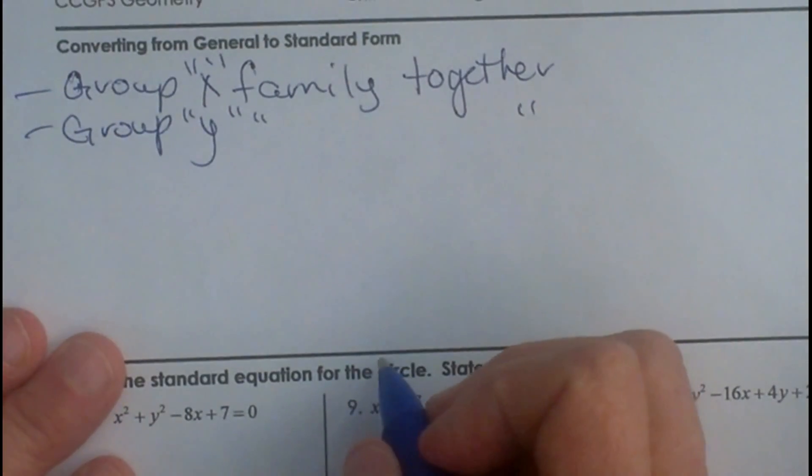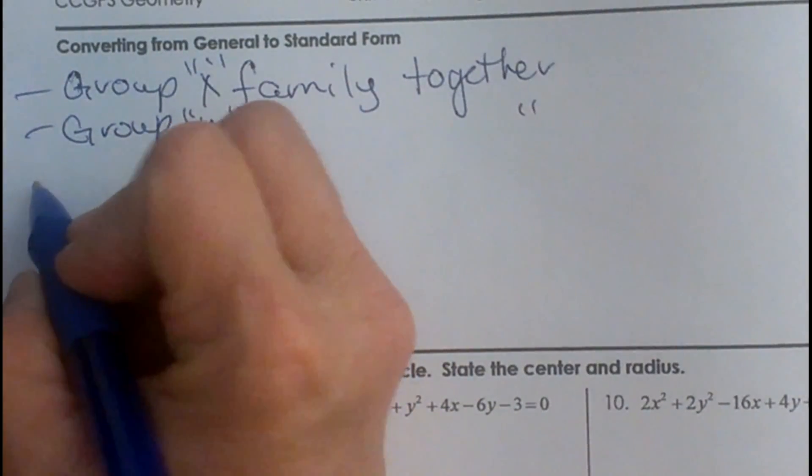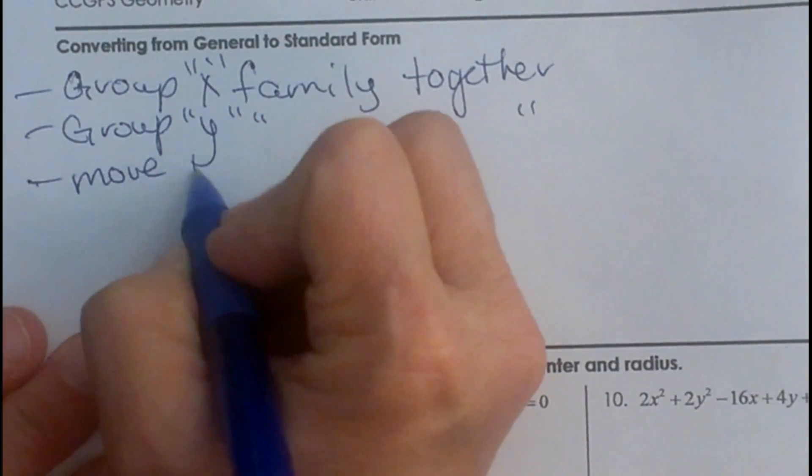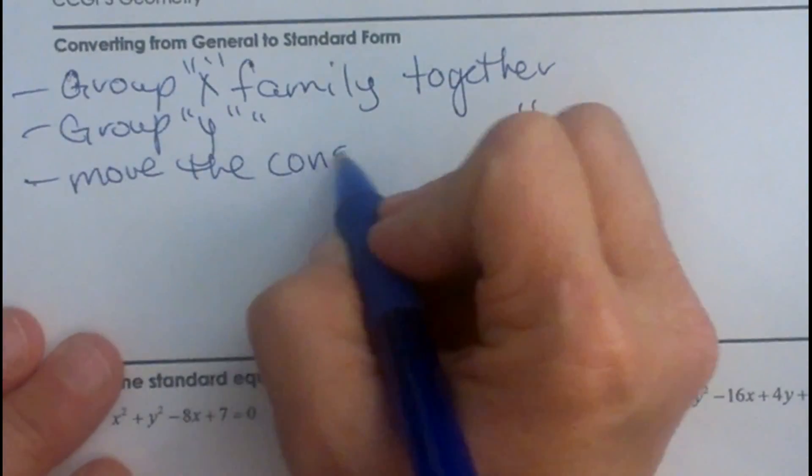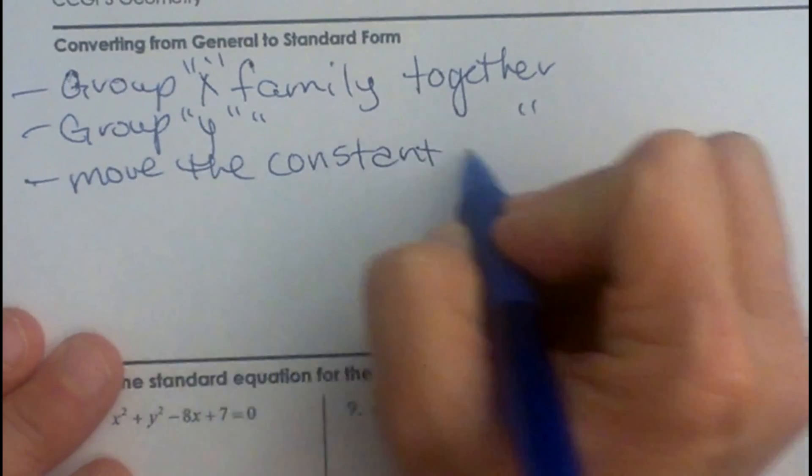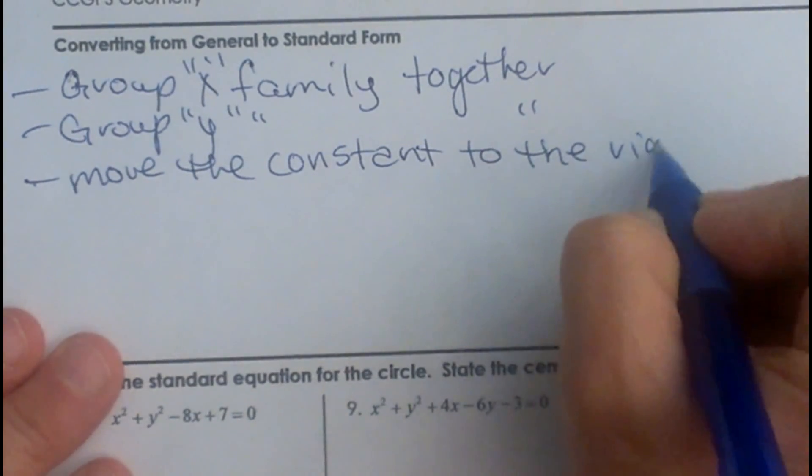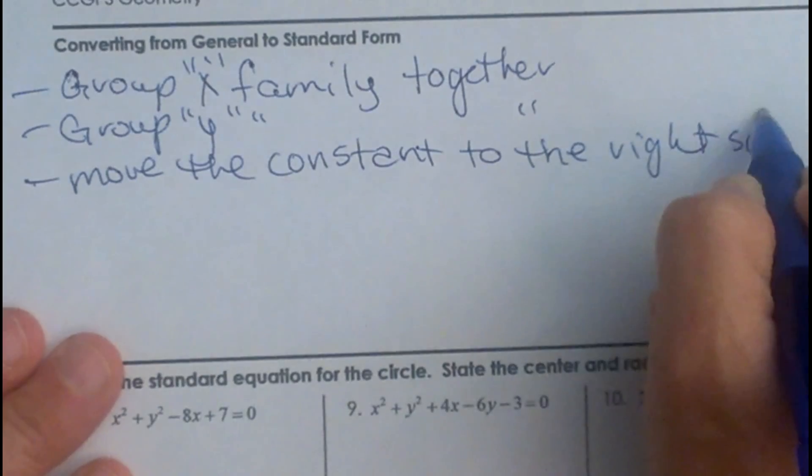And then from there, we are going to move the constant, that is the number without a variable, to the right side of the equation.